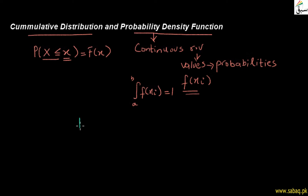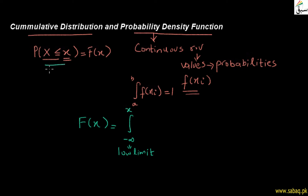How do we write it? We write F(x) with the lower limit as minus infinity, which represents the lowest possible limit, continuing up to x. Because in the Cumulative Distribution Function, we take values from the smallest value up to x. So we have the integral of f(t) dt, where f(t) represents the PDF.